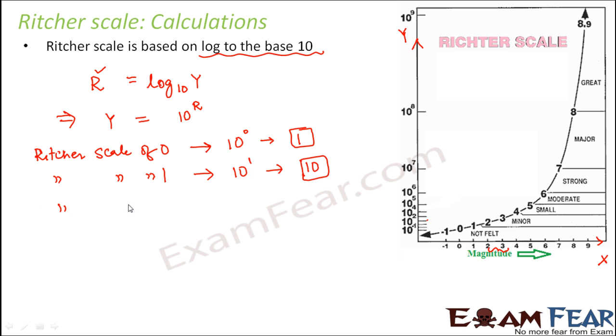A Richter scale of 2 would mean 10 to the power 2, which is equal to 100. A Richter scale of 3 would mean 10 to the power 3, which is 1000.